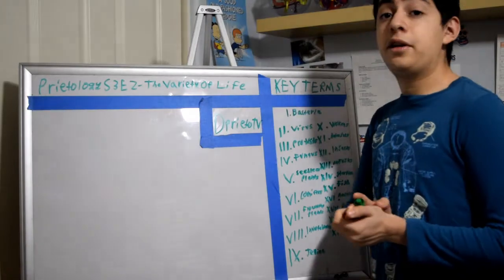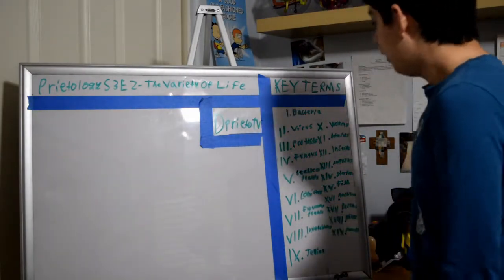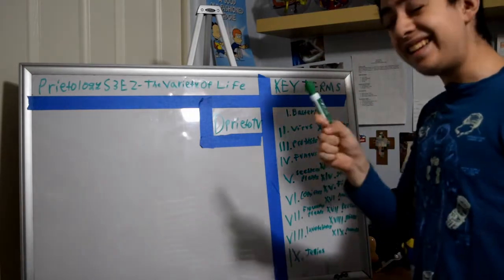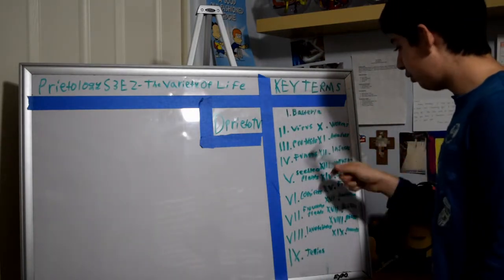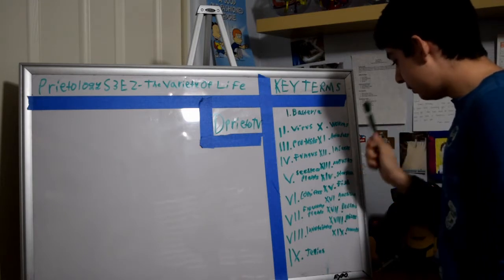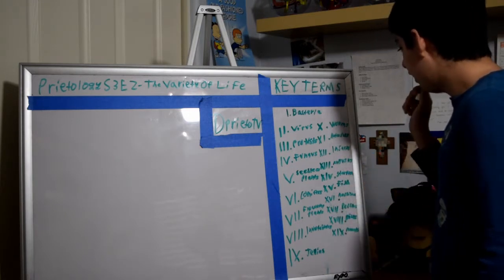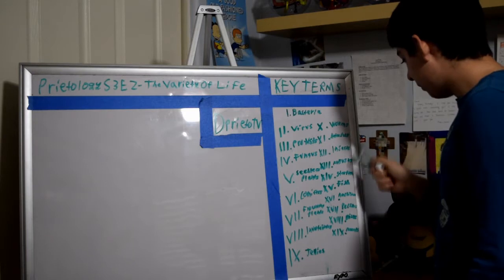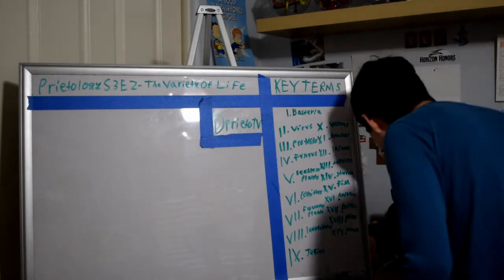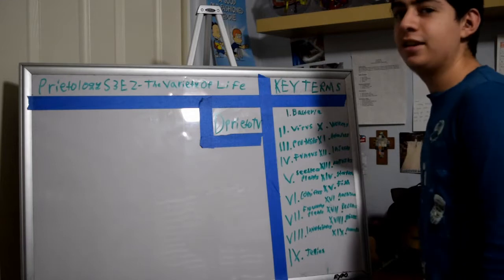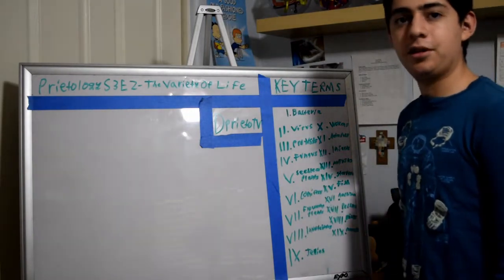So like always at the beginning of our videos, we refer you to the key terms. Our 19 key terms today: bacteria, virus, protists, fungus, seedless plants, conifers, flowering plants, invertebrates, jellies, worms, arthropods, insects, mollusks, starfish, fish, amphibians, reptiles, birds, and mammals. Let's get this going — first term, let's go.